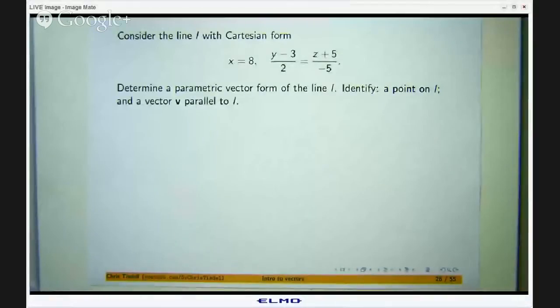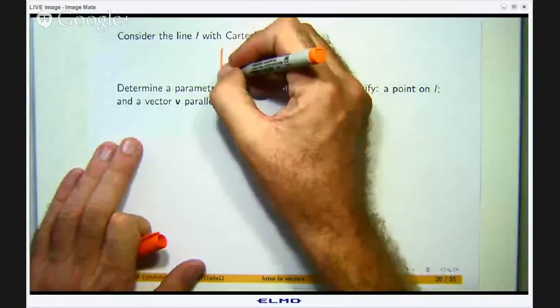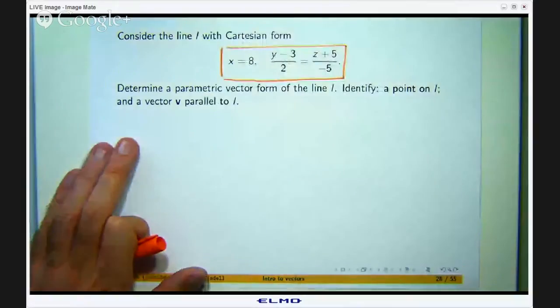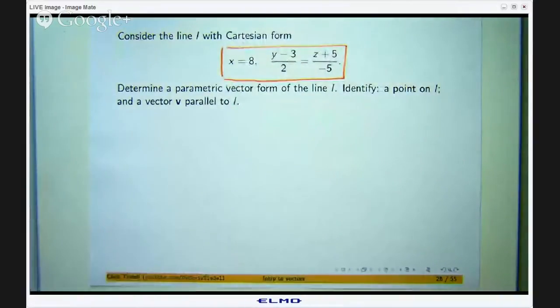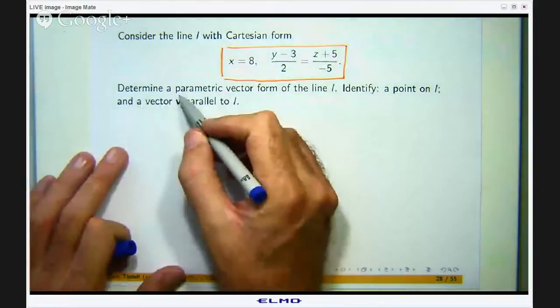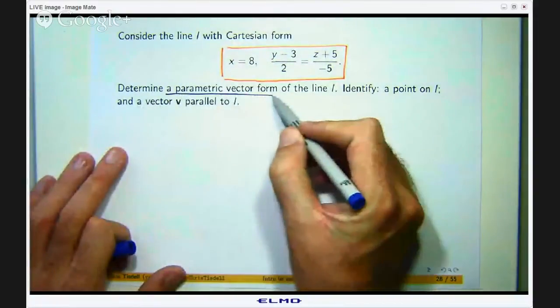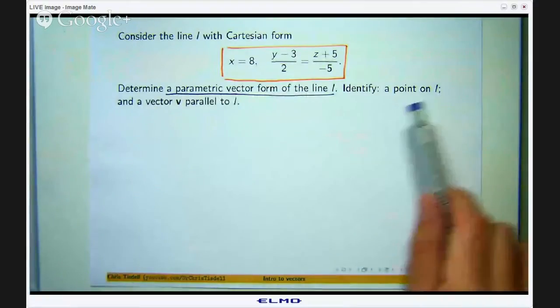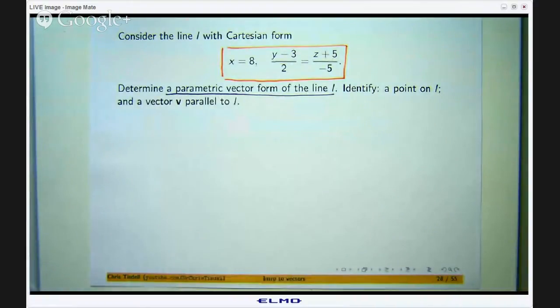Alright, so here is the example that we are going to look at. We have got a line L with a Cartesian form of the line given here. We are asked to determine a parametric vector form of the line L and we are also asked to identify a point on L and a vector V that is parallel to L.